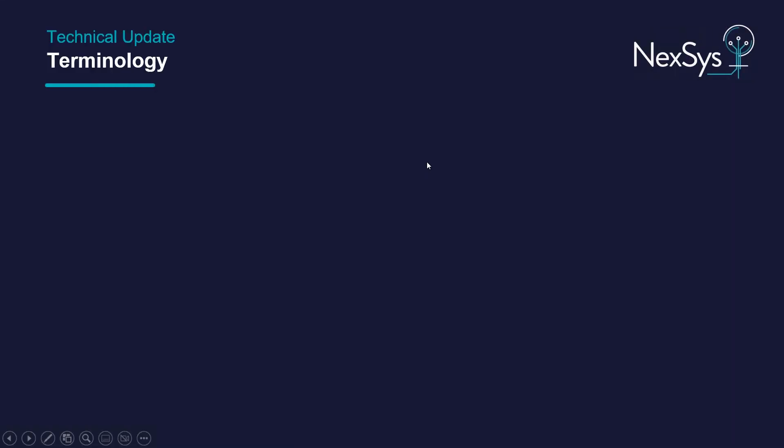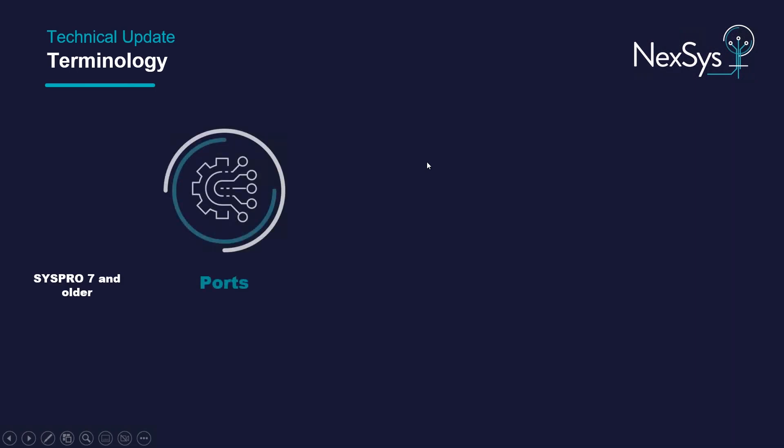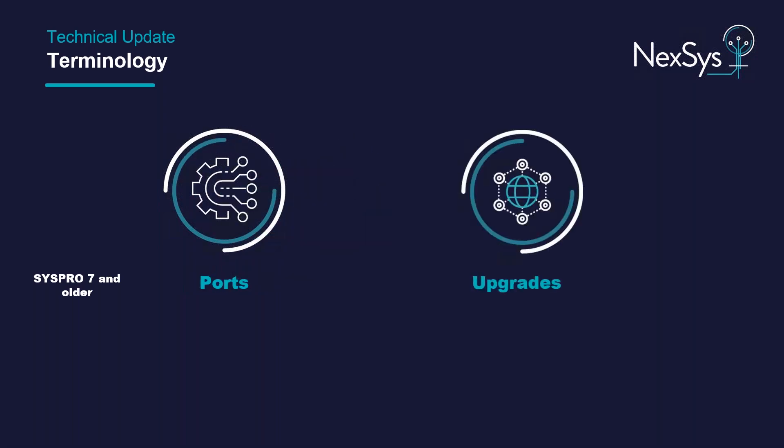I want to start with some terminology. Starting with the idea of ports: with CISPRO 7, if you've been in the CISPRO ecosystem for a while, you'll know we've had ports for a long time, where corrections would get rolled up in a port introduced either weekly, monthly, or every two months, depending on the phase of that particular release. As new versions of CISPRO were released, we moved into the concept of upgrades. So if you're on CISPRO 6, you'd upgrade to the latest version, which is CISPRO 8. Ports are now legacy, and upgrades exist between versions of CISPRO.